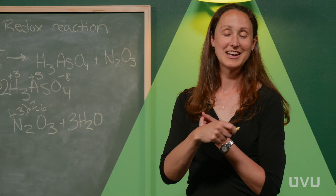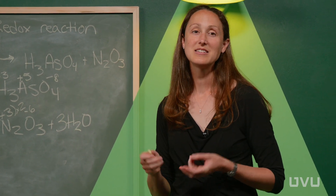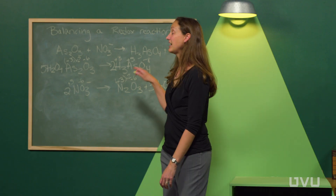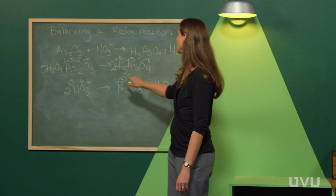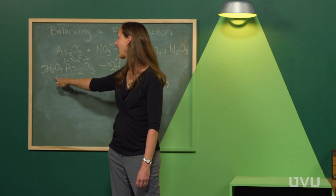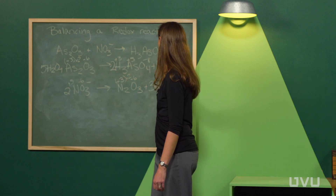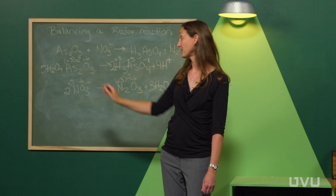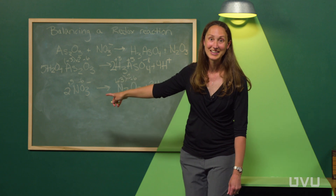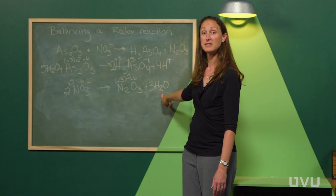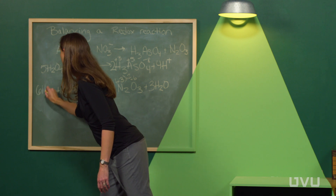With oxygens balanced, it's time to balance hydrogens by adding H+ ions (protons), assuming acidic conditions. Add protons to whichever side is short. For the arsenic half-reaction, there are ten hydrogens on the left and six on the right, so add four protons to the right. For the nitrogen half-reaction, there are six hydrogens on the right from the water molecules but none on the left, so add six protons to the left.